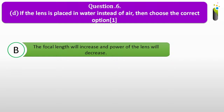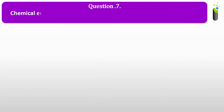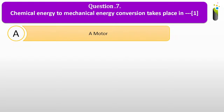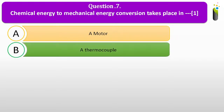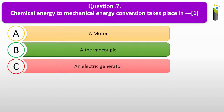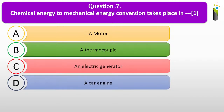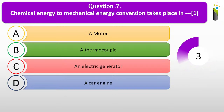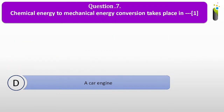Going ahead to question number seven. Chemical energy to mechanical energy conversion takes place in dash: A, a motor; B, a thermocouple; C, an electric generator; D, a car engine. The answer is a car engine.